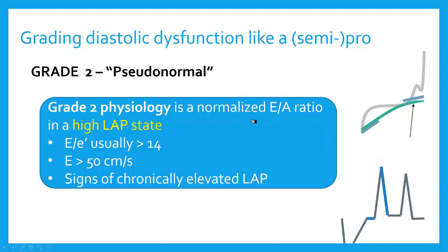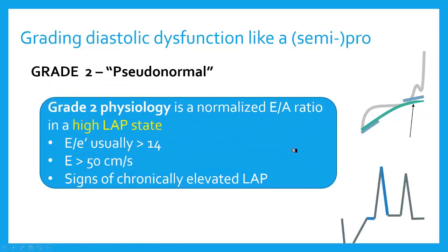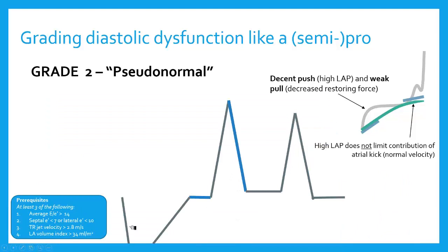Grade 2 diastolic dysfunction is what's called pseudonormal. Now my E to A ratio comes back to normal — remember before it was reversed. In grade 2 it pseudonormalizes. My E comes back to be normal, but that's not because my pull effect is back in play. It's because I now have a high left atrial pressure state. So that E velocity is going to be high again simply because I have high left atrial pressure. My E to E-prime is going to be high because it's a marker of left atrial pressure. And I'm going to have other signs of chronically elevated left atrial pressure — things like an increased left atrial volume or secondary pulmonary hypertension with a high TR jet velocity.